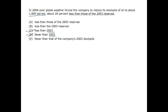Let's look for more objective problems. E says "fewer than that." What is "that" compared to or referencing? It can't be barrels because that's plural, and it can't be stockpile because E mentions a stockpile later. So E has a bad reference and is out.